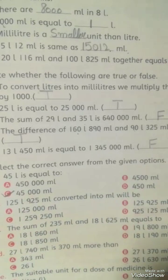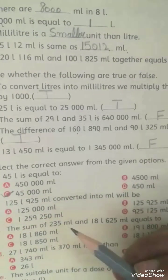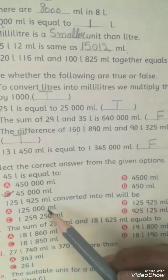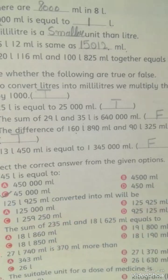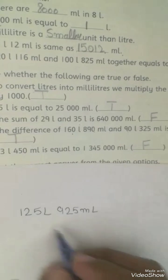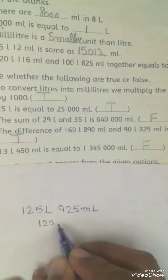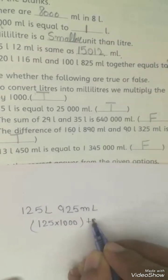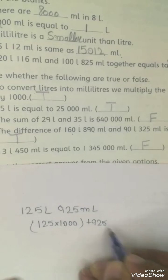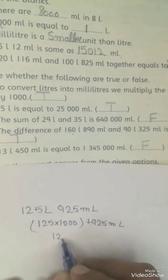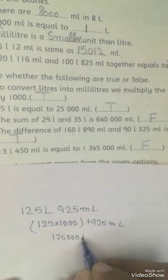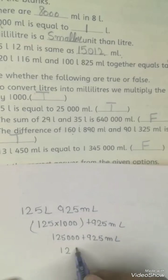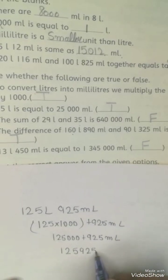Next question: 125 liters and 925 milliliters converted into milliliters. We will solve this. 125 multiplied by 1000 plus 925 milliliters equals 125,000 plus 925, which gives 125,925 milliliters. Option B is your answer.